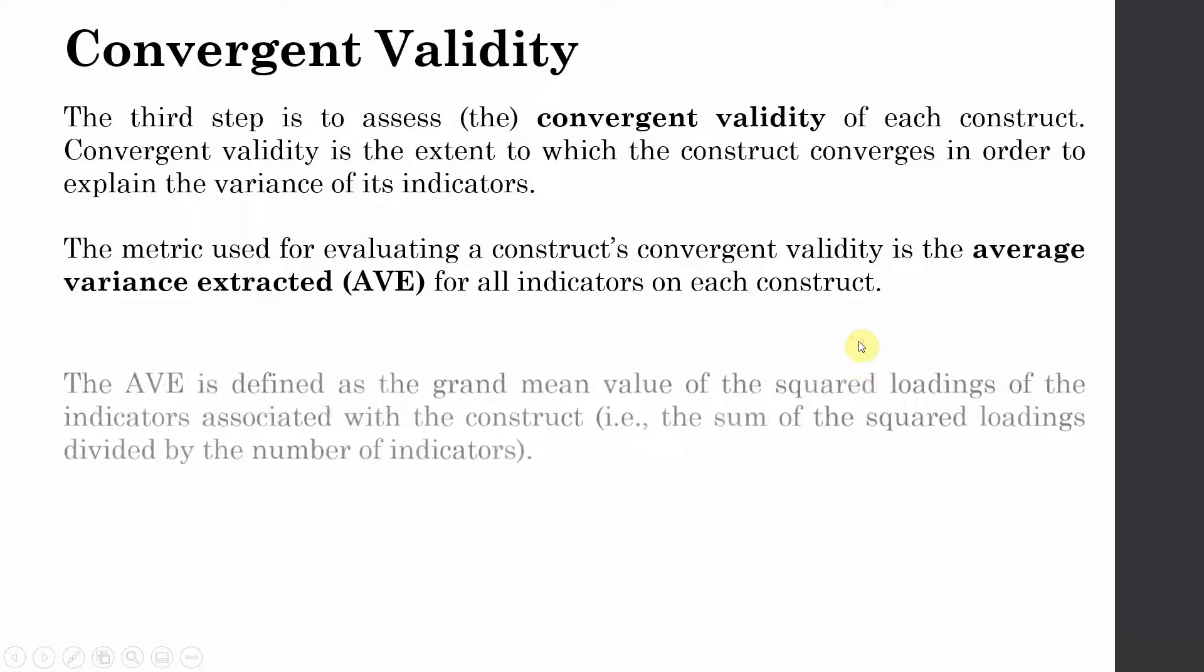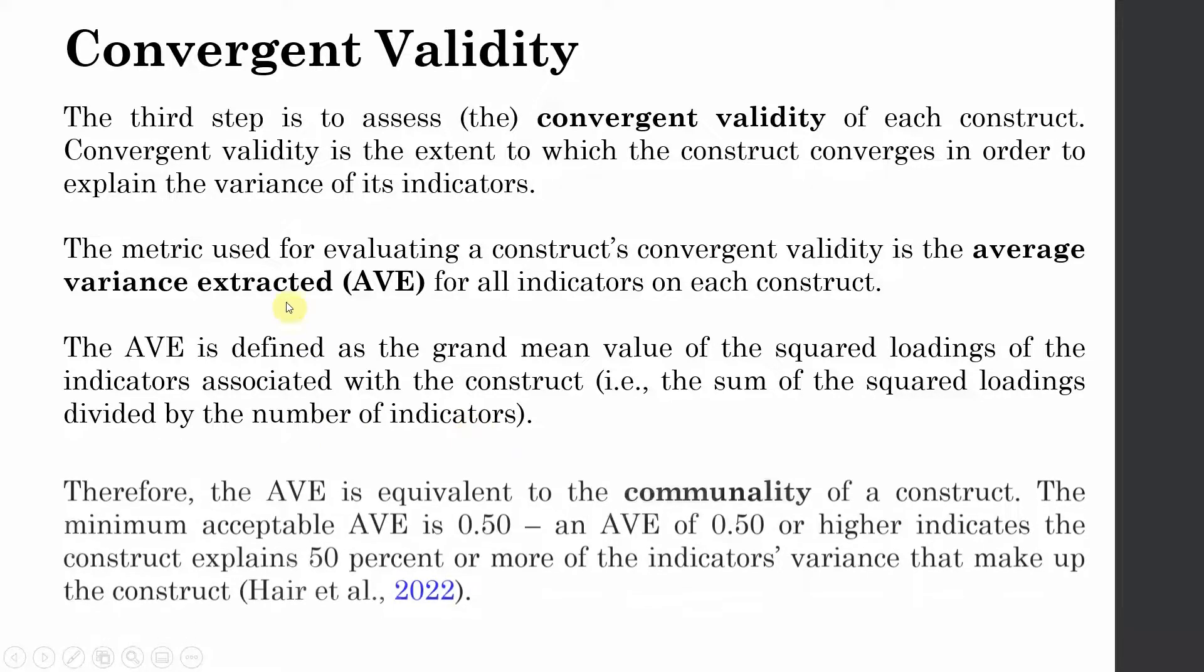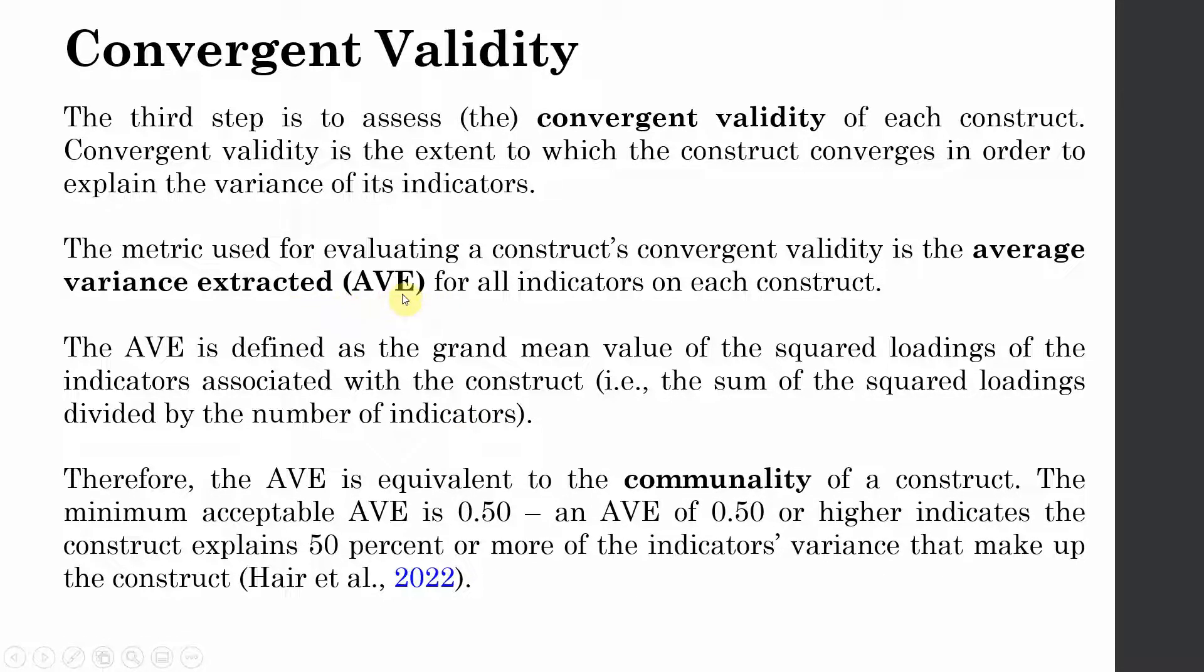The metric or the measure that we use to establish convergent validity is called average variance extracted, or AVE, for all indicators on each construct. The AVE is defined as the grand mean value of the squared loadings of the indicators associated with the construct. So what we do is we simply take the square of each of the loadings that we did earlier and then sum the squared loadings. Once the squared loadings are summed they are divided by the number of indicators and this will give us the average variance extracted for all the indicators on each construct. Now this has to be done separately for all the constructs in your study. Therefore your AVE is equivalent to commonality of a construct. The minimum acceptable value is 0.50. An AVE of 0.50 or higher indicates the construct has the ability to explain 50% or more of its indicators variance.